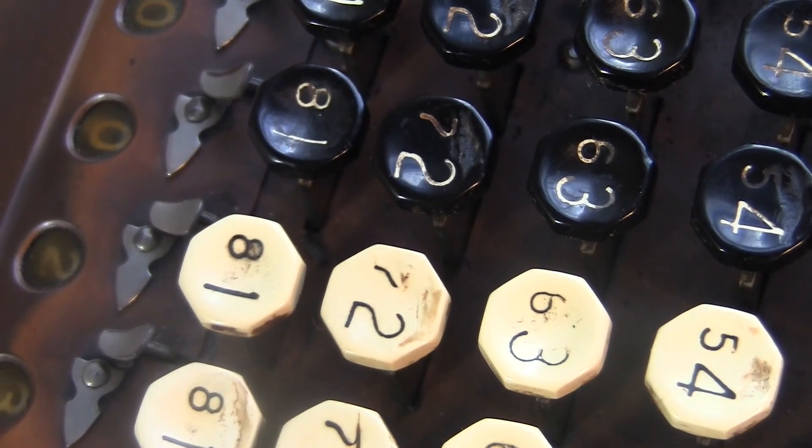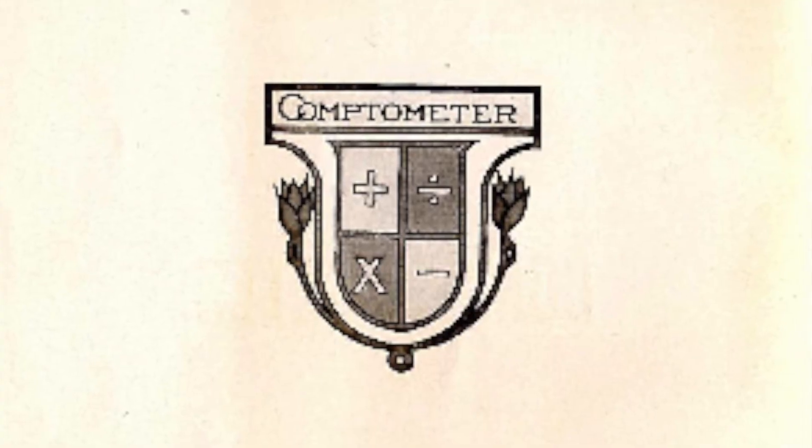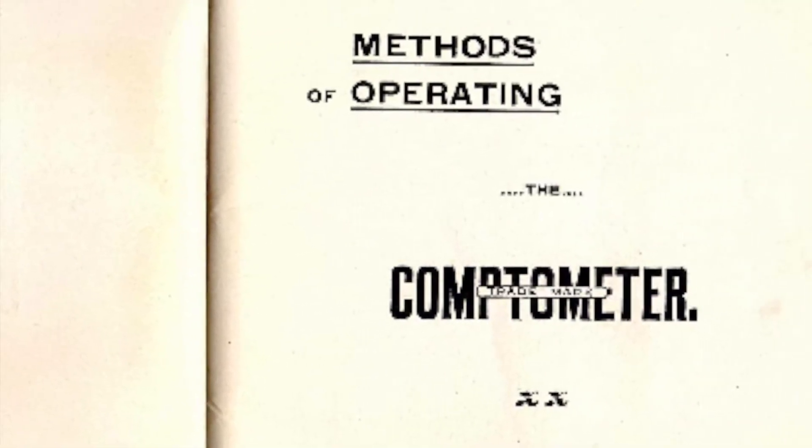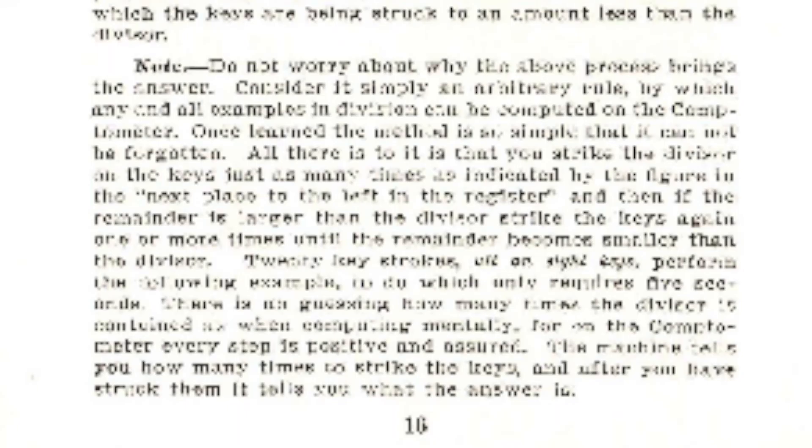I'm a mathematician, so naturally I want to know why this works. Here's what this official book has to say about it. Do not worry about why the above process brings the answer. Consider it simply an arbitrary rule by which any and all examples in division can be computed on the comptometer.